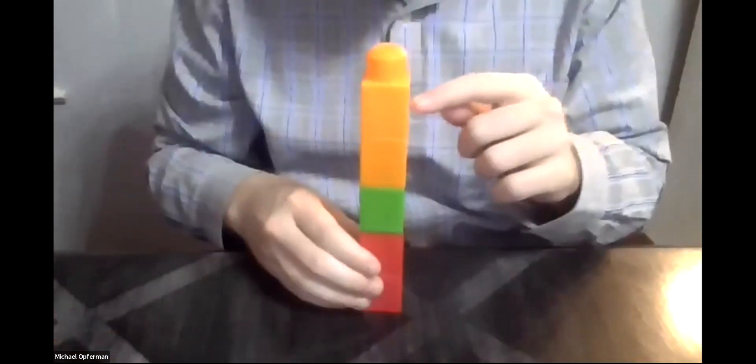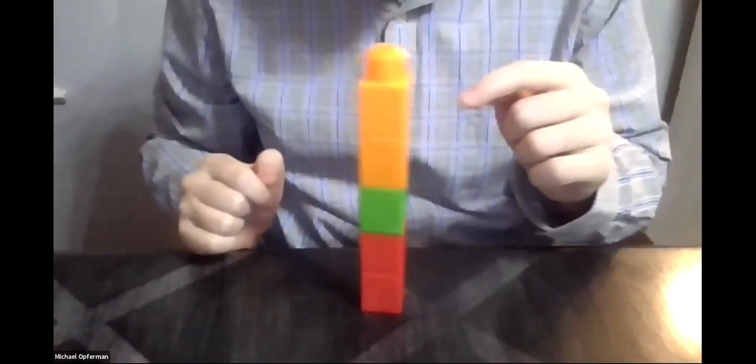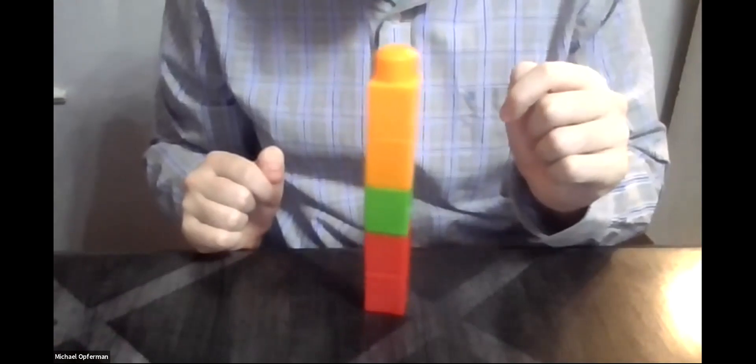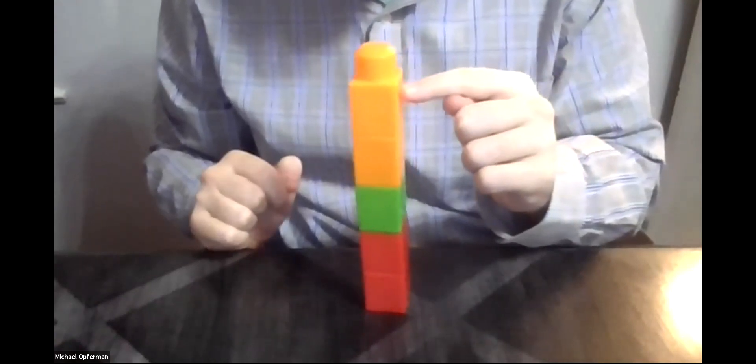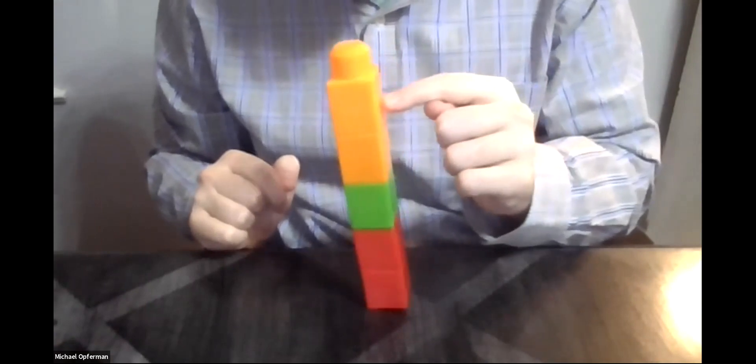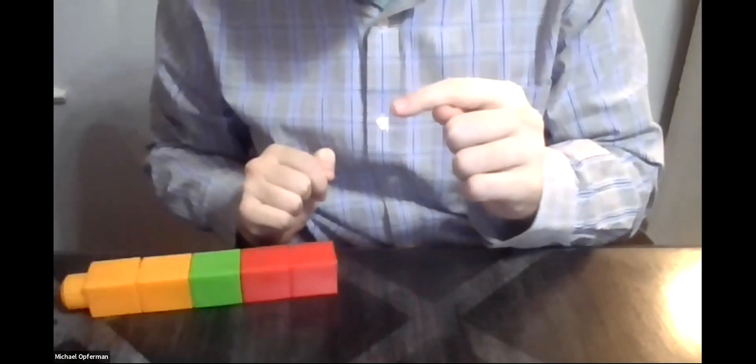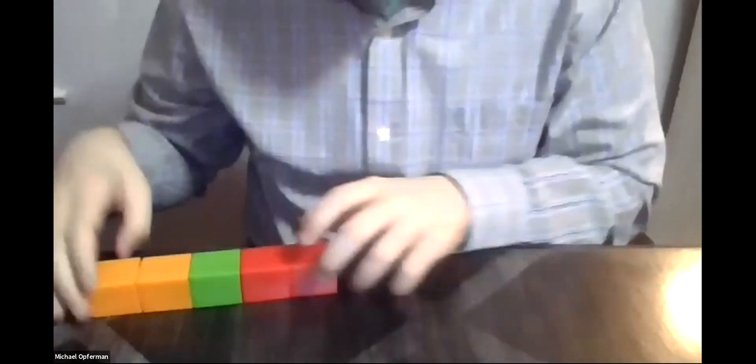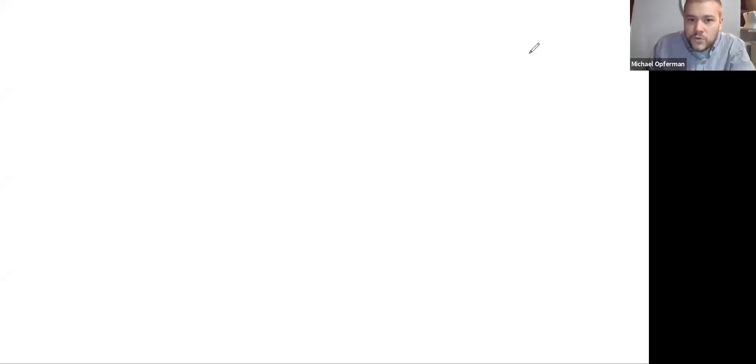But if I give it an even smaller push than that, it will actually come back to the stable situation. But if I push it past a certain point, it will tip over. So what is that tipping point, that literal tipping point, where if I cross over that point, the object is going to tip over? Let's see if we can figure out what that is using the ideas of torque.